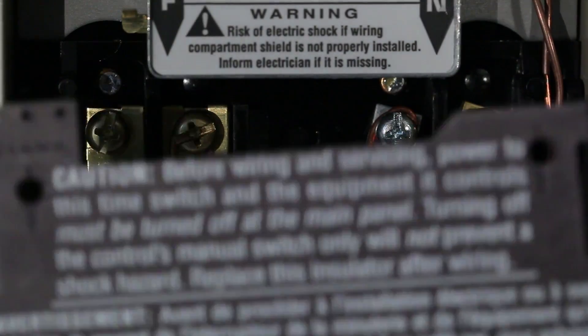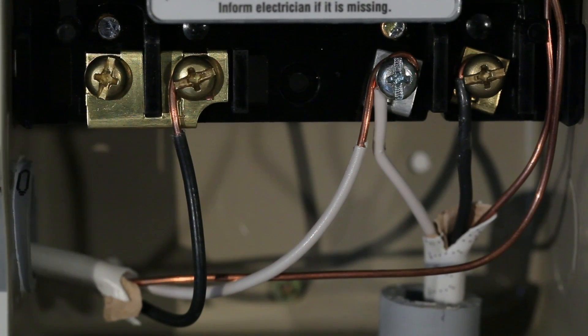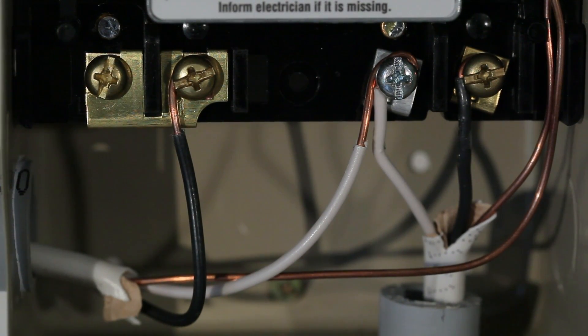Remove the insulating panel from the timer. Here we have a typical 120 volt wiring scheme. Note the four screw terminals.